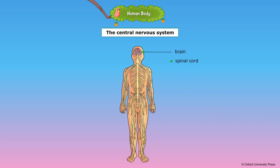The nervous system consists of the brain, the spinal cord and the nerves. The nervous system controls the actions of all parts of our body. The brain is the main organ that controls the nervous system. Nerves carry messages from the sense organs to the brain, and the brain commands the body parts to react suitably. The nerves again carry back these messages from the brain to the body parts.